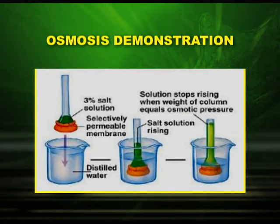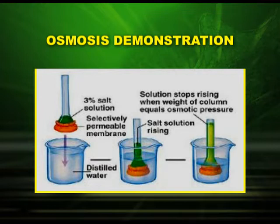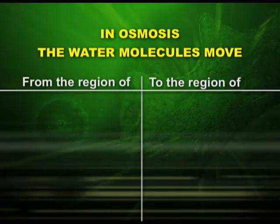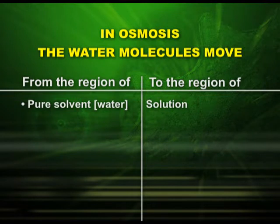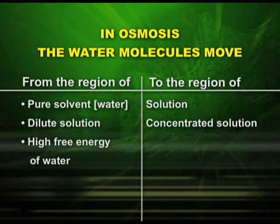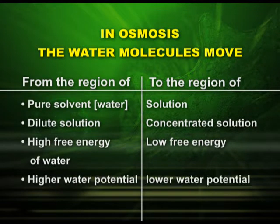Next, we can see another osmosis demonstration. Here you can see distilled water and a three percent solute solution separated by a selectively permeable membrane. When put into distilled water, the solution stops rising when the weight of the column equals osmotic pressure, showing the rise of the salt solution. To summarize: in osmosis, water molecules move from pure solvent to solution, from dilute to concentrated solution, from high free energy to low free energy, and from higher water potential to lower water potential.